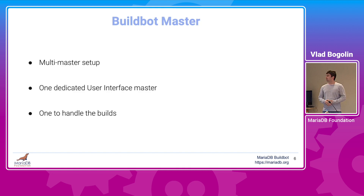Let's talk in more detail about each component. We use a multi-master setup with a dedicated user interface master. This process only queries the BuildBot database and shows information on the BuildBot web page. The second master handles all the builds — looking for changes and scheduling the appropriate builds for each detected change. Both processes run on the same machine. We chose this setup to ensure the user interface is responsive independent of the number of running builds, as we had experienced interface delays with a single master.